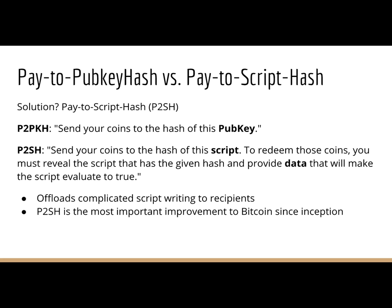Bitcoin gets around this with a clever trick called pay-to-script-hash (P2SH). Pay-to-public-key-hash is: send your coins to the hash of this public key. Pay-to-script-hash is: send your coins to the hash of this script. To redeem those coins, you must reveal the script with that given hash and provide data that makes it evaluate to true. This offloads the complicated script writing to the recipient of the funds — the company writes the script themselves and gives the hash to the customer. Pay-to-script-hash has turned out to be the biggest enhancement to Bitcoin since it came out.